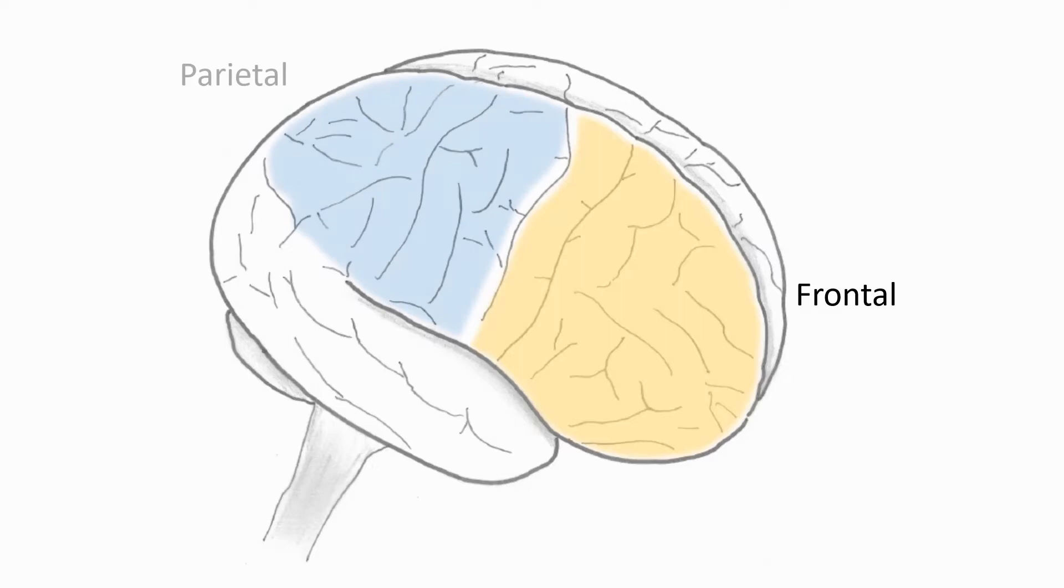Behind the frontal lobes we have the parietal lobes, which are important for a lot of automatic and unconscious processing of information, such as when we draw together information from different senses that make up what something is. So if I said the word soup, although we may not be aware of it, this is where the taste, the look, the smell of soup all come together to make the concept of soup.